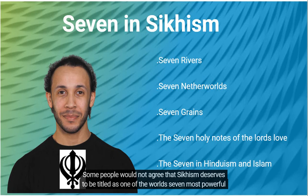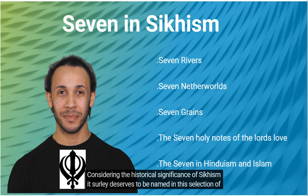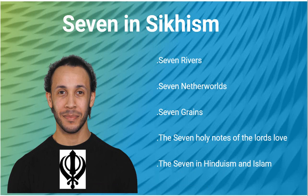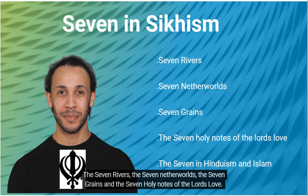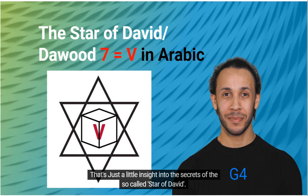Some people would not agree that Sikhism deserves to be titled as one of the world's seven most powerful religions, and they would mention how perhaps Taoism or Jainism would be the better option. Considering the historical significance of Sikhism, it certainly deserves to be named in this selection of belief systems. In Sikhism we find the seven rivers, the seven netherworlds, the seven grains, and the seven holy notes of the Lord's love. That is just a little insight into the secrets of the so-called Star of David.